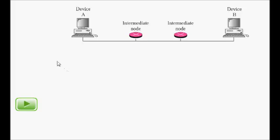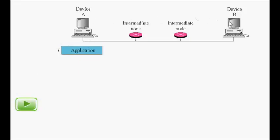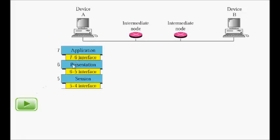Two devices communicating typically pass data through intermediate routers. For example, if there is an FTP server on one device and you want to access it, the application layer on your side is the FTP client. The application layer sends a request to get a file from the FTP server. Then there is the presentation layer, and the application layer is the first one. The presentation layer decides the format of the data.